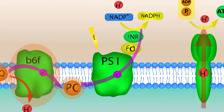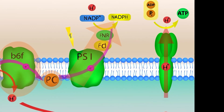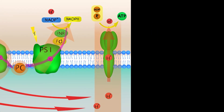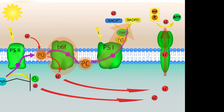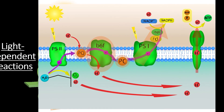Photosystem 1 is another pigment-containing enzyme. Instead of splitting water, photosystem 1 uses the energy it gathers to re-energize the electrons. The re-energized electrons can then be added to the electron carrier NADP+ to create NADPH. As a final step, the hydrogen ion gradient established by this electron transport chain is passed through ATP synthase to produce ATP molecules. We'll see how the light-independent processes use the ATP and NADPH created by these reactions.